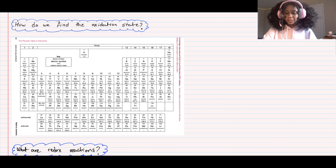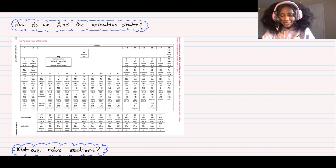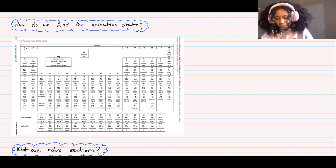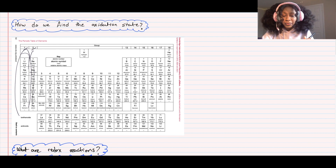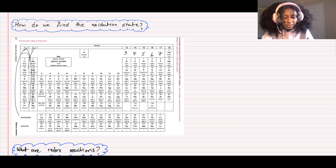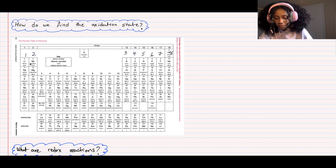How do we find the oxidation state? We use our periodic table. You'll notice it tells you the group number - this first column is group one, then group two. We're going to ignore the block in the center because these are the transition metals, which have varying oxidation states - they can have multiple. Then moving on, we have groups three, four, five, six, seven, and eight.